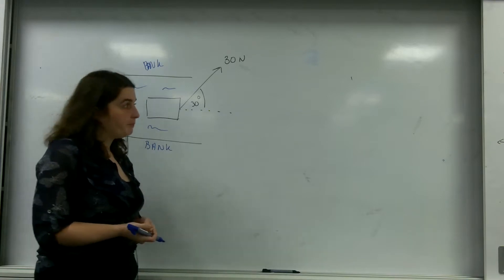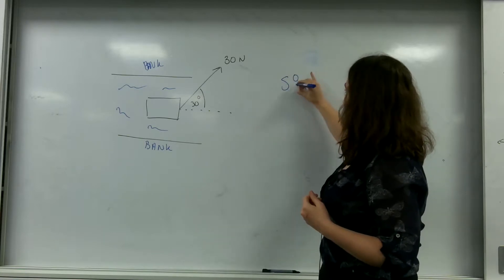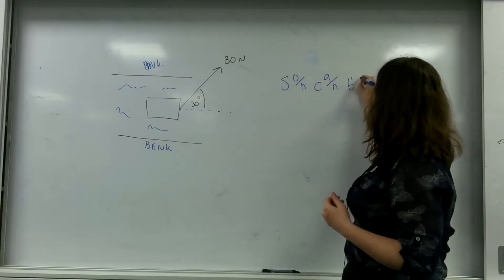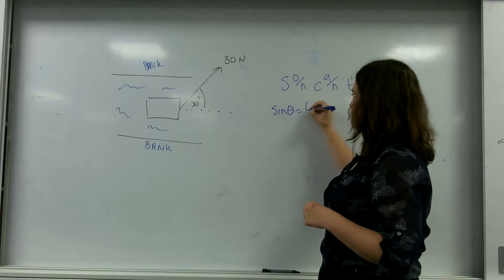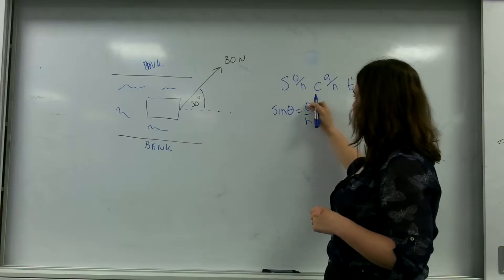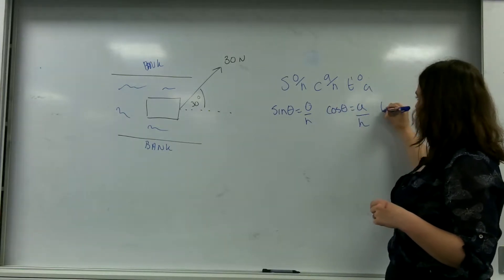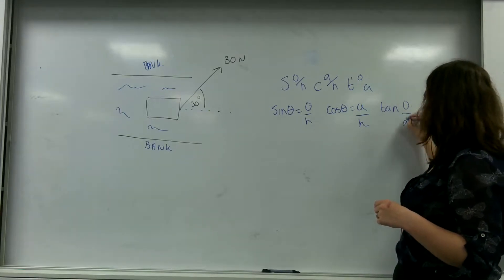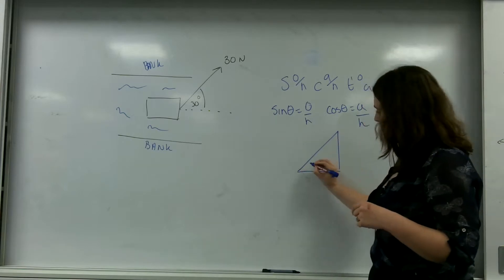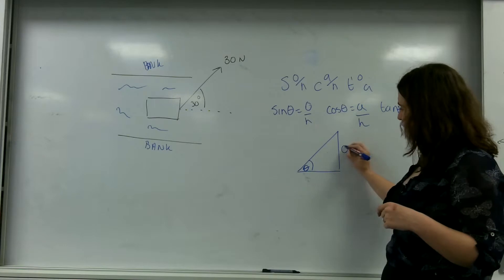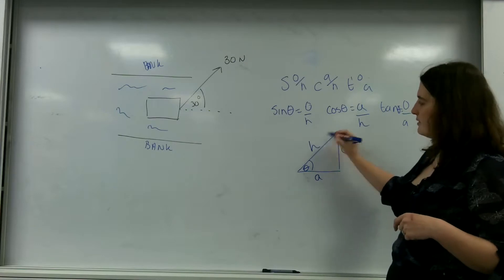I do this using SOH CAH TOA, which is trigonometry. Sine theta is the opposite over the hypotenuse. Cos theta is the adjacent over the hypotenuse. And tan theta is the opposite over the adjacent. If I draw a triangle here: there's my angle, that is the opposite of my angle, this is my adjacent because it's next to it, and that there is the hypotenuse.